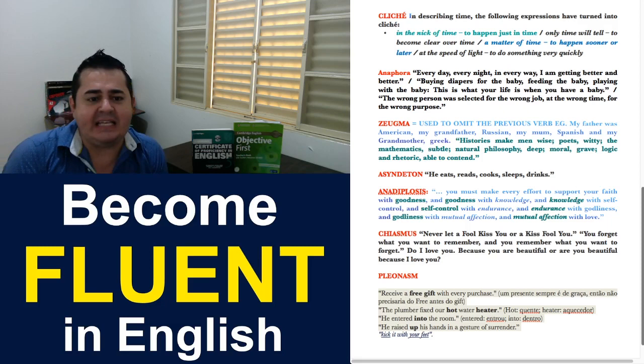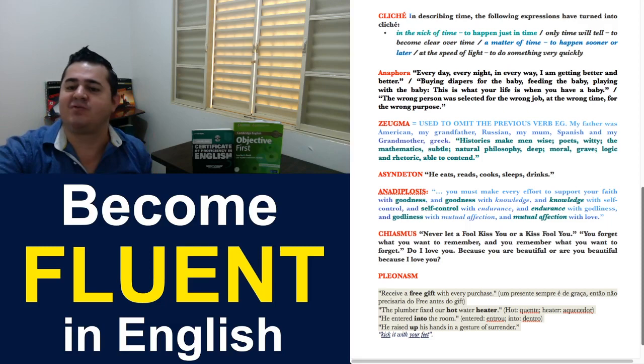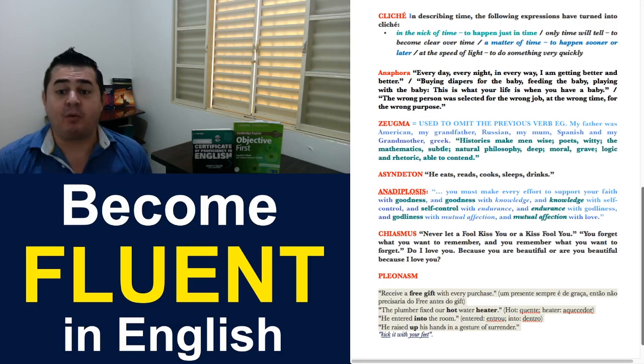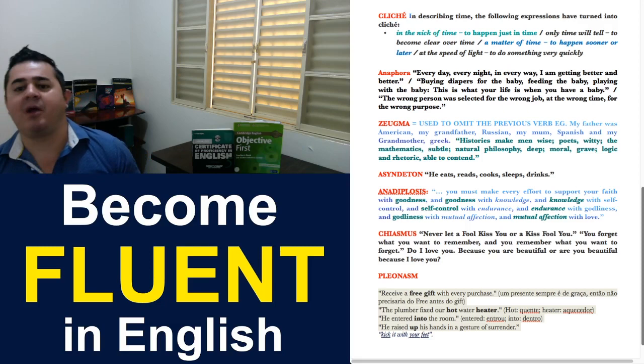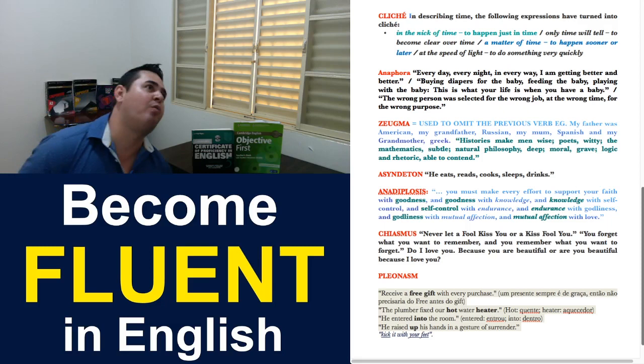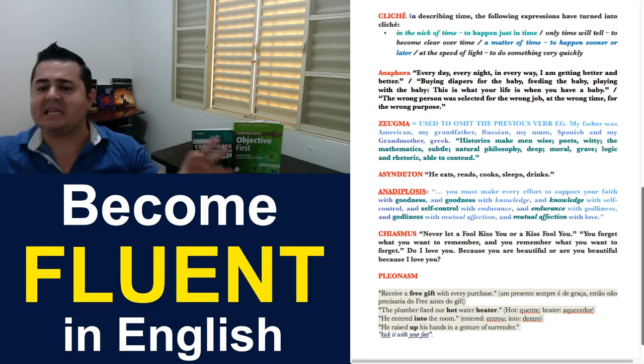Next one is zeugma. Which basically is when we omit the previous verb. So, we leave out the previous verb. For example: My father was American. My grandfather, Russian. My mom, Spanish. And my grandmother, Greek. In other words, I don't need to say my father was American and my grandmother was Russian and my mom was Spanish and my grandmother was Greek. We don't need to repeat the verb to be all the time.